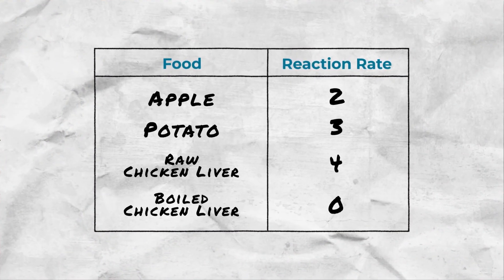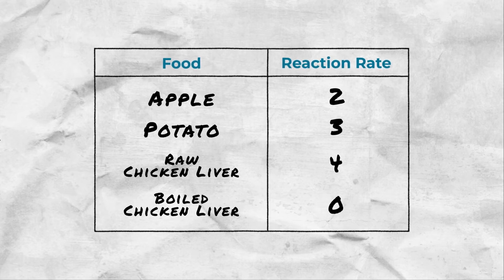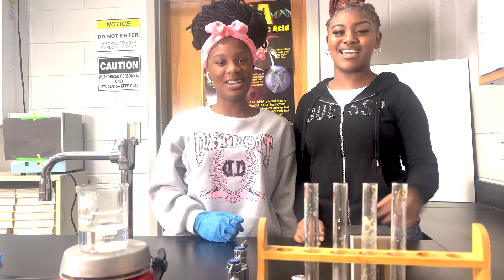As you can see from this lab, the raw liver had the most catalase present and the boiled liver had the least catalase present. This shows that adding extreme heat to working enzymes denatures them.